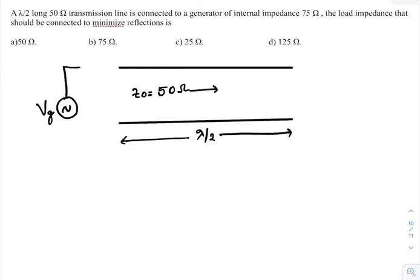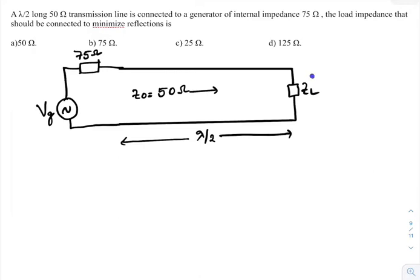The internal impedance is 75 ohm and I am going to connect this to the transmission line. At the end, I am going to place a load and the question is what should be the value of ZL in order to get minimum reflections. Since VG is the voltage at the source, due to the internal impedance there exists a drop here.